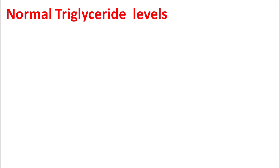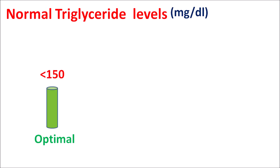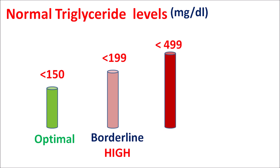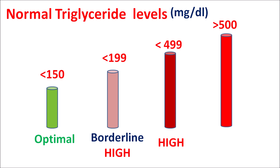For triglyceride levels, below 150 mg/dL is considered optimal. Between 150 to 199 is borderline high. Between 200 and 499 is high, and above 500 is considered very high. Fibrates along with niacin can be used to reduce elevated triglyceride levels.